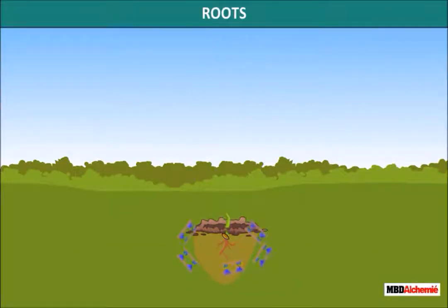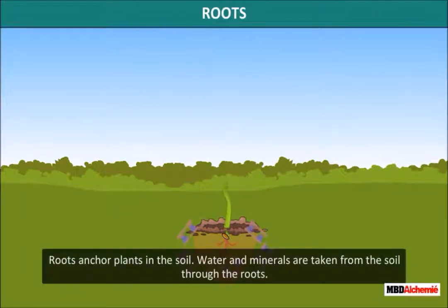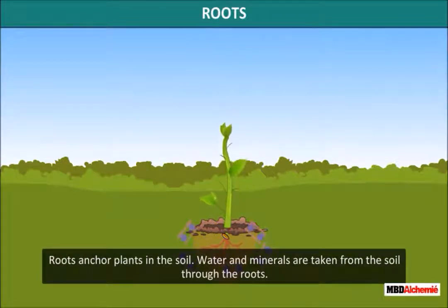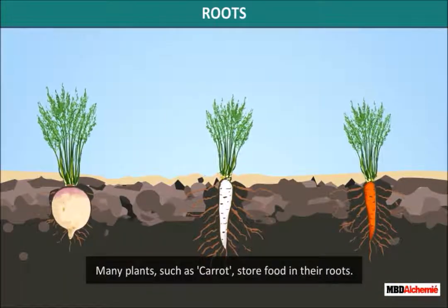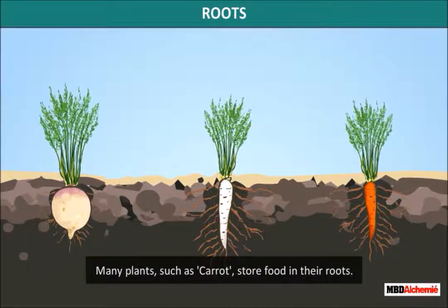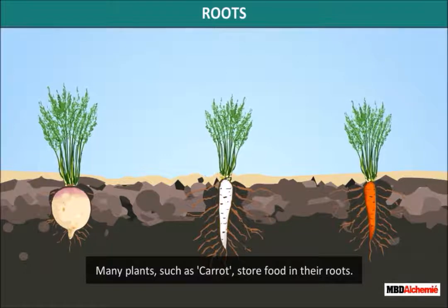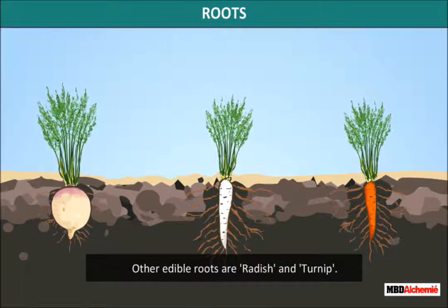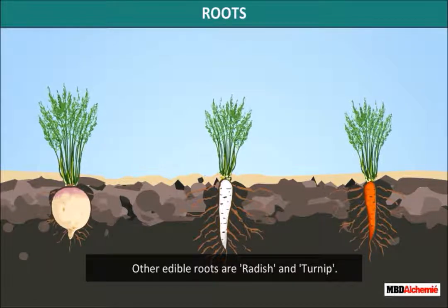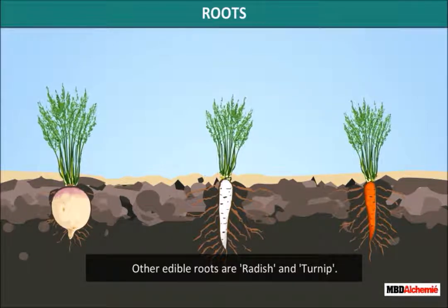Roots anchor plants in the soil. Water and minerals are taken from the soil through the roots. Many plants, such as carrots, store food in their roots. Other edible roots are radish and turnip.